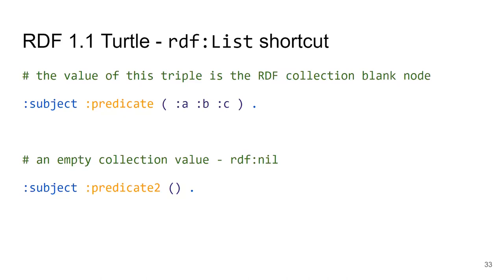The rdf:List structure for ordered values has a compact Turtle syntax: simply write the items in parentheses in the desired order. This represents the full linked-list structure underneath. It is easy to write in Turtle, but querying this data structure later is still challenging because at the triple level the same complex structure exists.